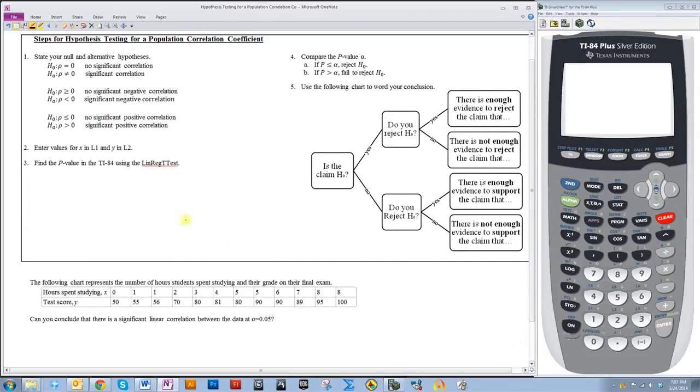So what I want to do is first figure out my null and alternative hypothesis. So, since this is a significant linear correlation and it doesn't say anything about positive or negative, that means we're going to use this first set up here.